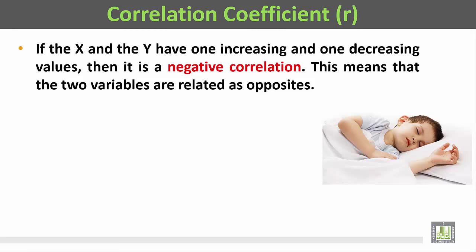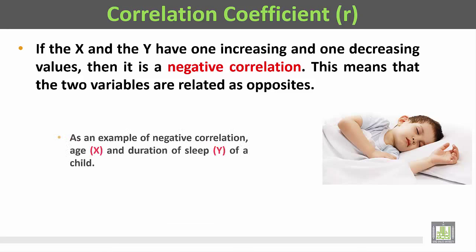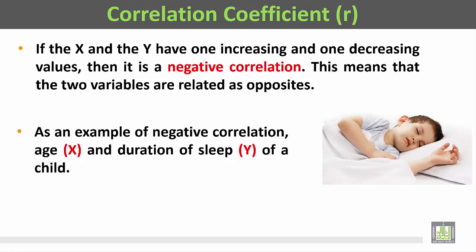If X and Y have one increasing and one decreasing value, then it is a negative correlation. This means the two values are related as opposites — when the independent variable increases, the dependent variable decreases, making it a negative or inverse relationship.